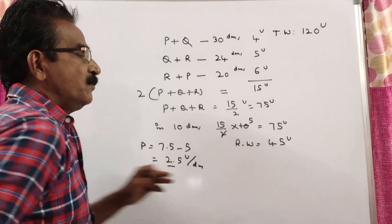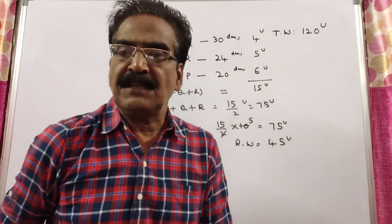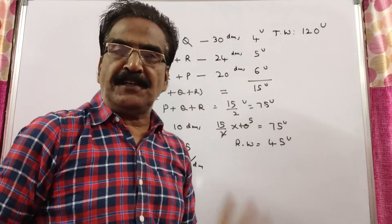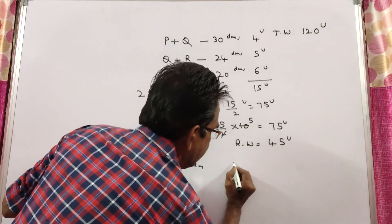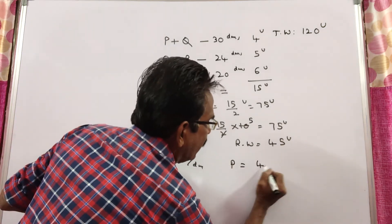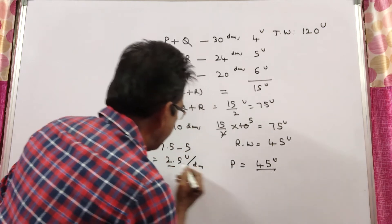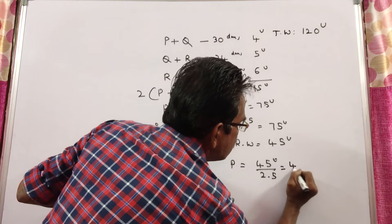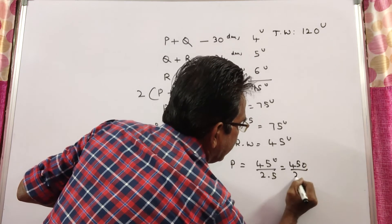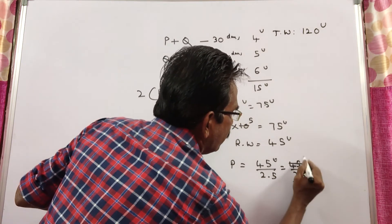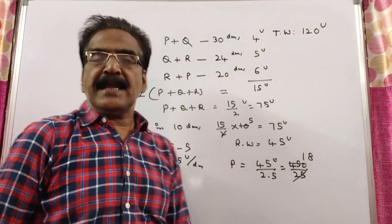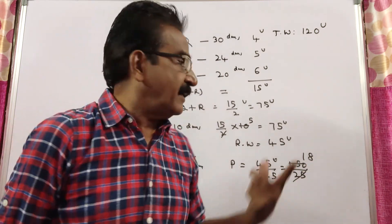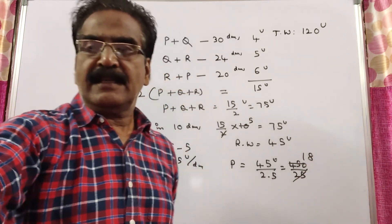So, the remaining work is 45 units. So, P takes to complete this 45 units of work in 2.5 days. So, this is equal to 450 by 25, 18. So, P can complete the remaining work in 18 days. Thank you.